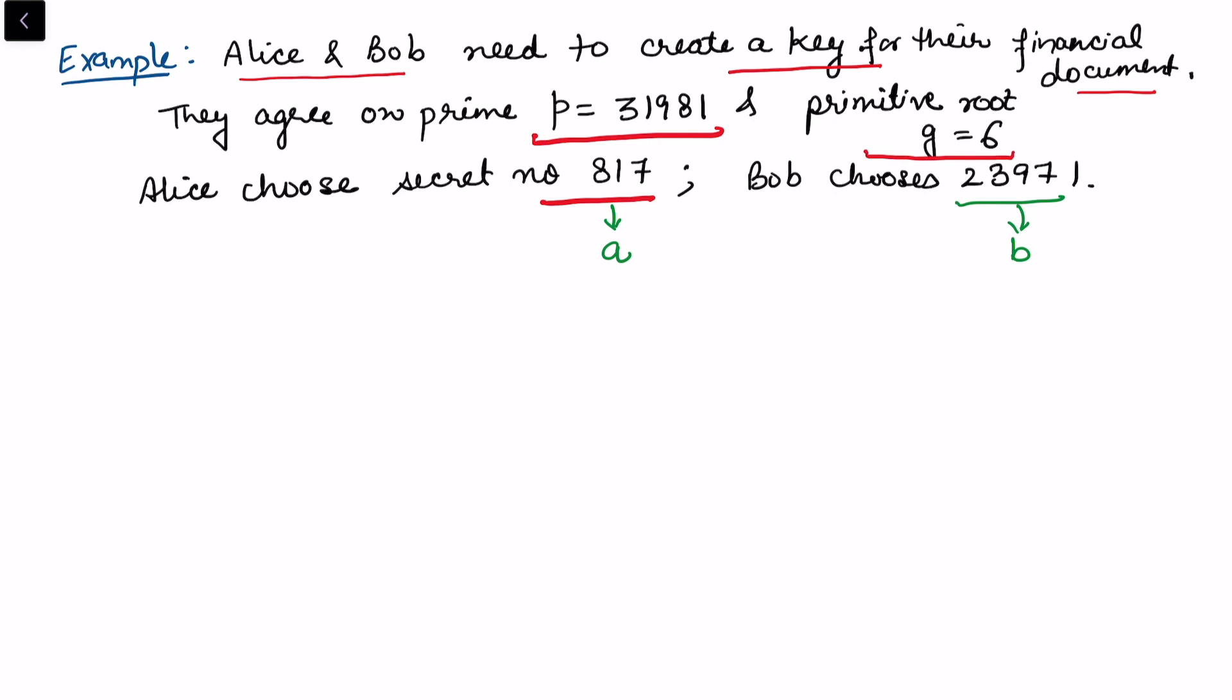They both have access to their secret numbers, and they have p and g. The first thing Alice wants to compute is h1. Alice wants to compute h1, which is congruent to g to the power a mod p.